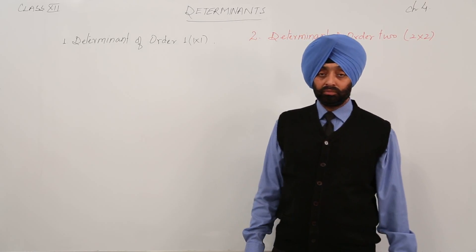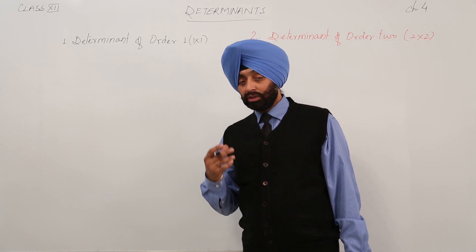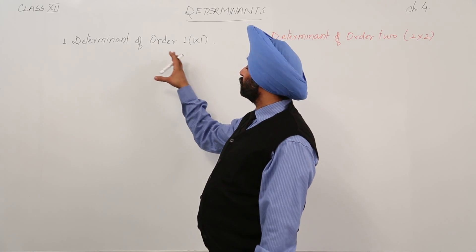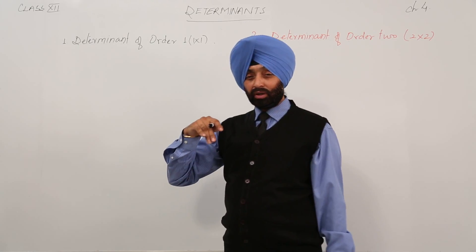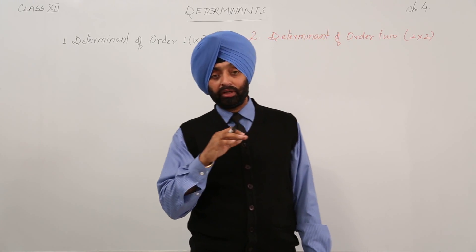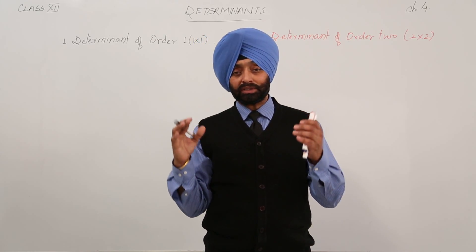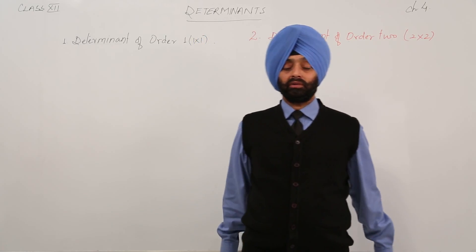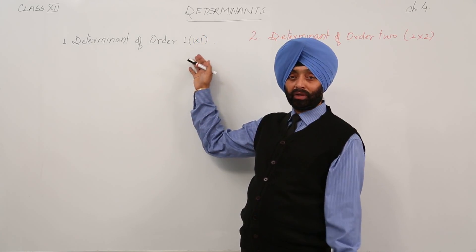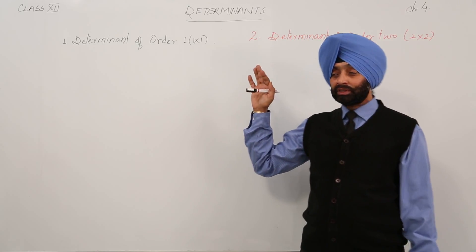We are now on the determinant part. In the contents we wrote: determinant of order 1×1, determinant of order 2×2, and determinant of order 3×3. Now we are starting with the determinant of order 1×1.